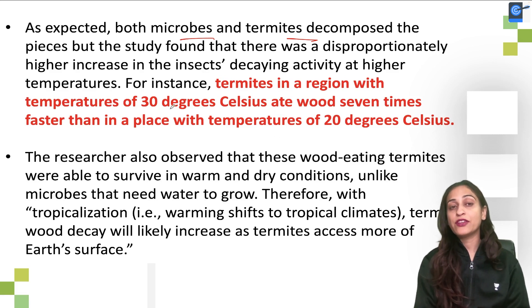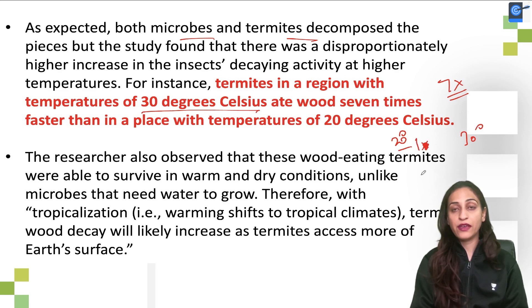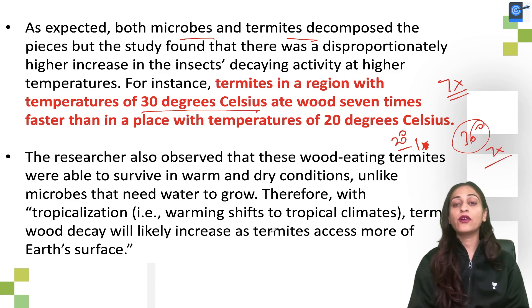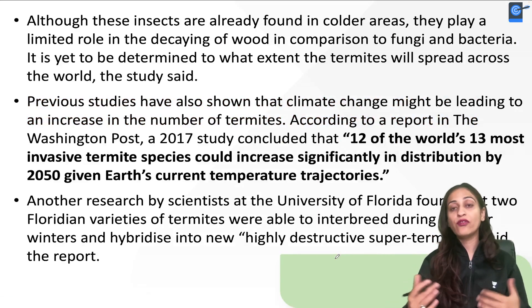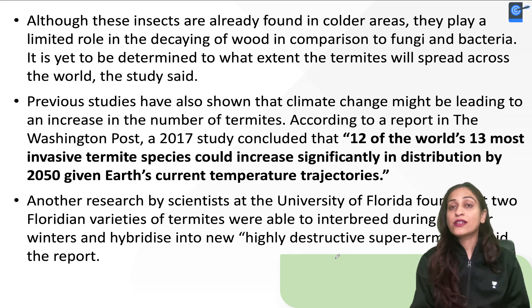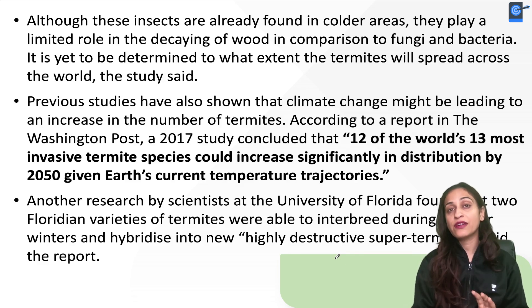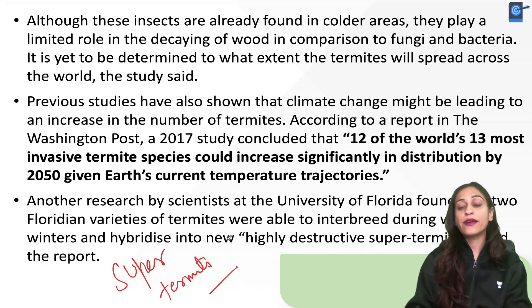In regions where temperature is around 30 degrees Celsius compared to 20 degrees, termite activity and wood consumption is much faster. Temperature increase is causing tropicalization — warming is shifting toward tropical climates, so termites will get access to new areas and will thrive. Insects can have a limited role generally, but when it comes to wood, termites can be highly destructive — they can become super destructive, and this is something to be taken care of.